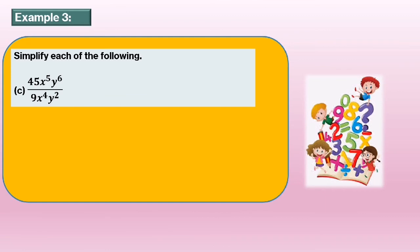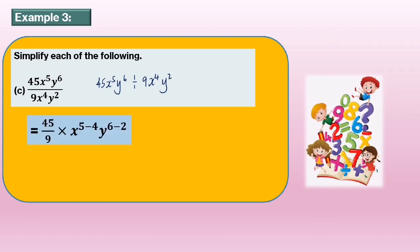Now we look at Example 3c: 45 s power of 5 times y power of 6 over 9 s power of 4 times y power of 2. So 45 divided by 9 gives 5, s power of 5 minus 4, y power of 6 minus 2. The answer is 5s times y power of 4.